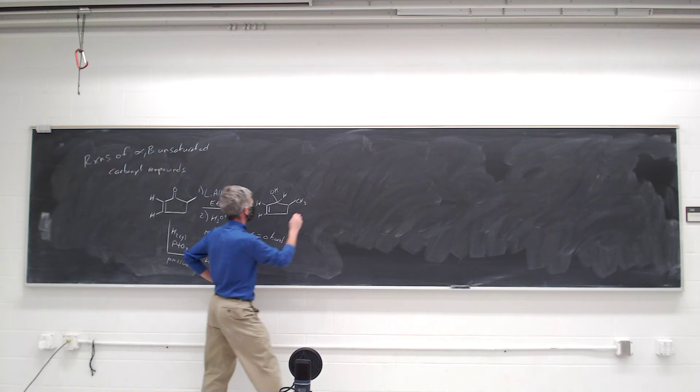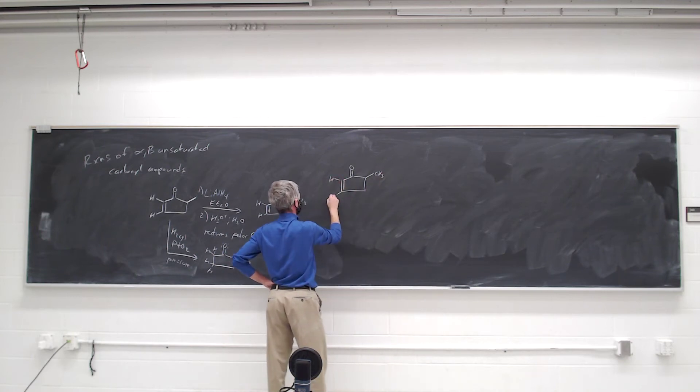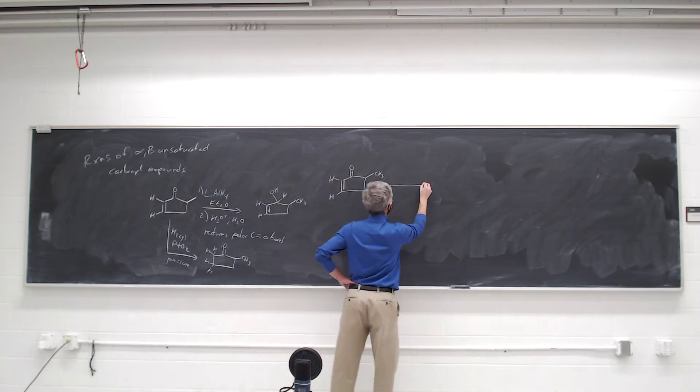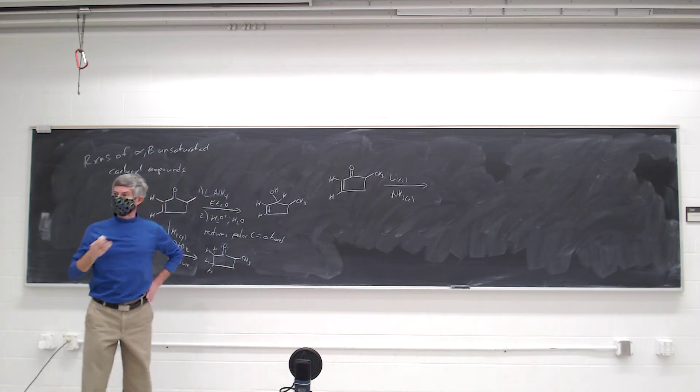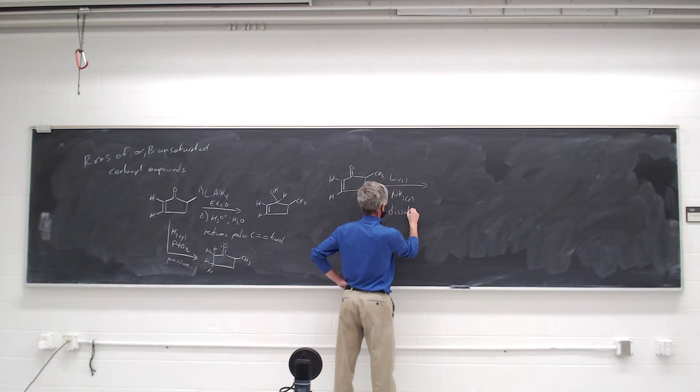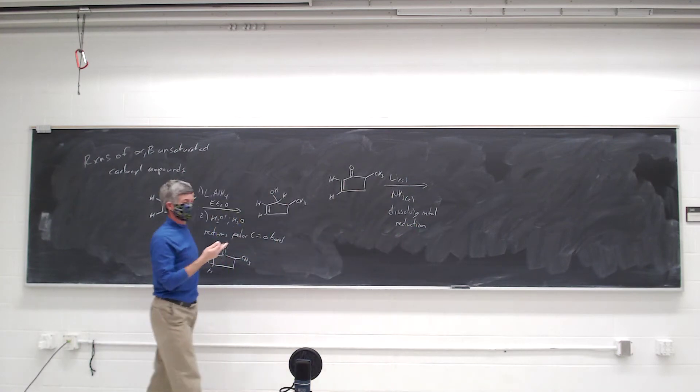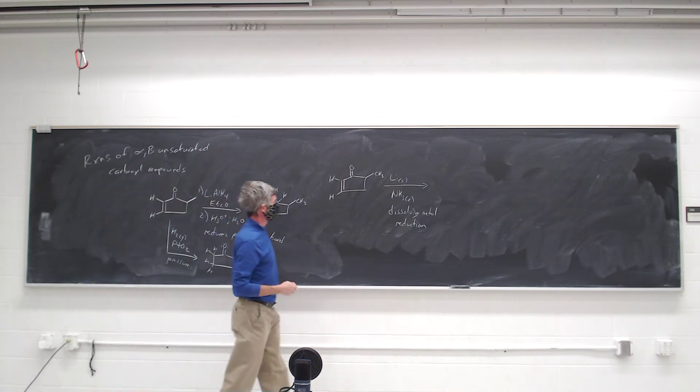But we can also reduce an alpha-beta unsaturated carbonyl group with a dissolving metal reduction, lithium in liquid ammonia, where the dissolving metal reduction would not normally touch either carbon-carbon or the carbon-oxygen double bond. So in this case, the fact that the carbon-oxygen and carbon-carbon double bond are next to each other is crucial for getting this reaction to go.